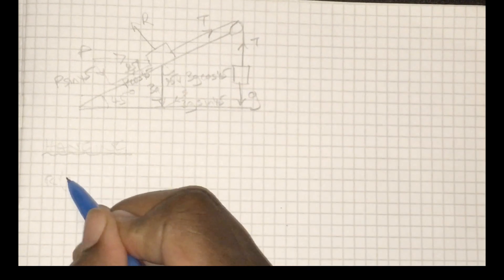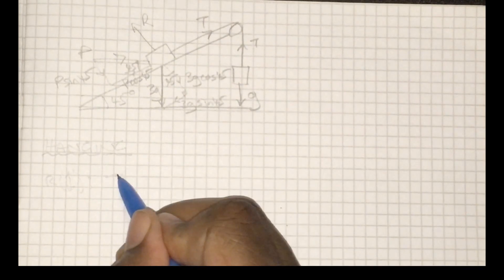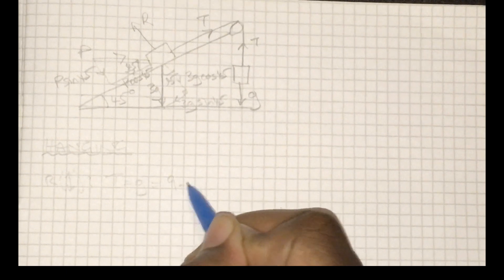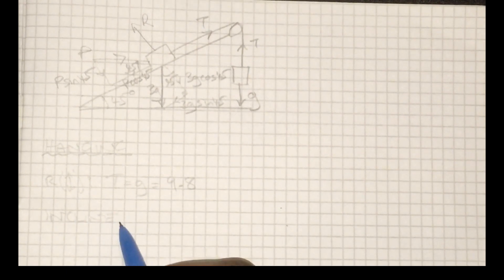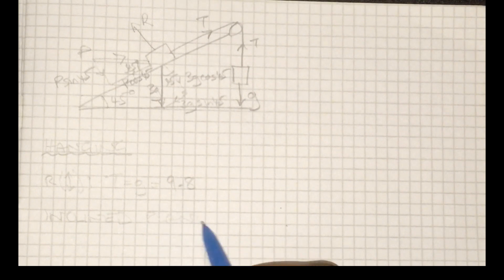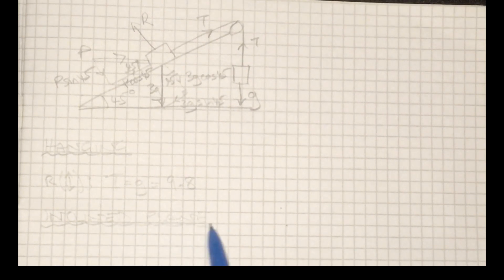The force up should equal the force down, so actually quite quickly I realized that the tension is also going to be g. So now I can focus on the incline plane. For the incline plane, we have a smooth surface.